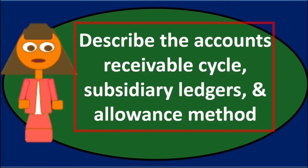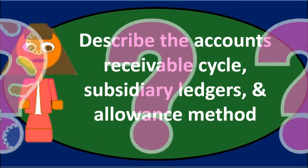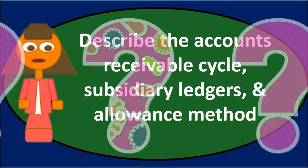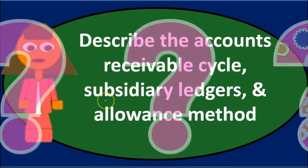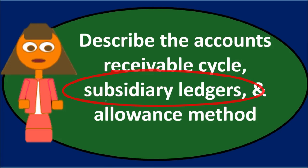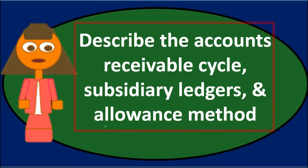So this is a pretty comprehensive question asking about many of the major components of receivables: what is the receivable, what's the receivable cycle, what are the journal entries related to the receivable, how do we know who we're going to bill — that having to do with the subsidiary ledger — and how do we deal with the problem of receivables being potentially overstated, which has to do with the allowance method.